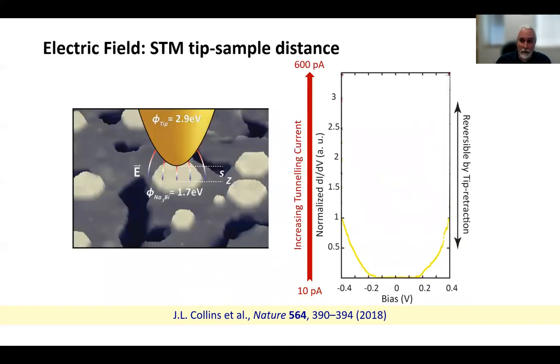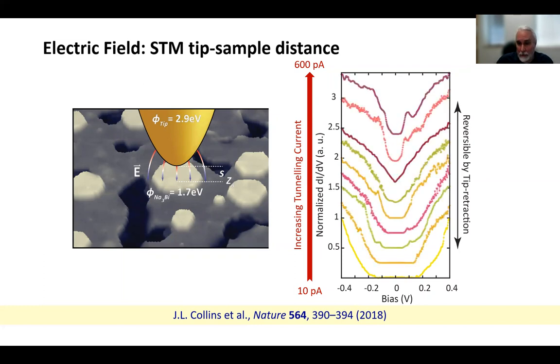We can also use the tip to vary the electric field in the material. There's a built-in electric field due to the work function difference between tip and sample. And so varying tip distance actually varies electric field. And as we bring the tip closer to the sample, we can see that the band gap that we imaged spectroscopically closes down and reopens again. I can show that here with these dashed red lines. You can see the band gap closing down to zero and then reopening.